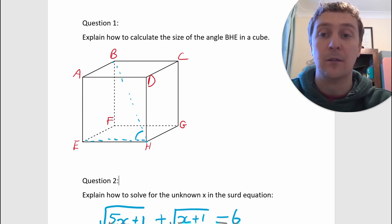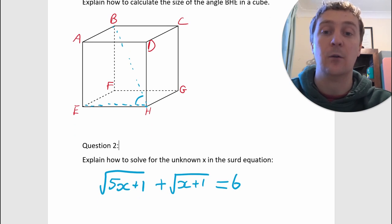Or if you want something completely different, then you can look at question two. Explain how to solve for the unknown x in the surd equation: the square root of 5x plus 1 plus the square root of x plus 1 is equal to 6. So have a go at either of them. You can write your explanation in the comments below and we'll see how you get on.